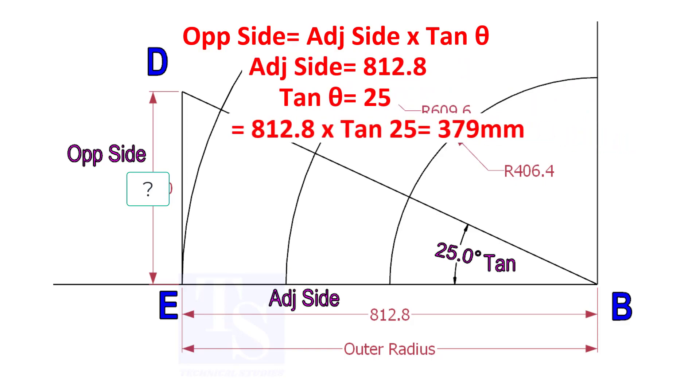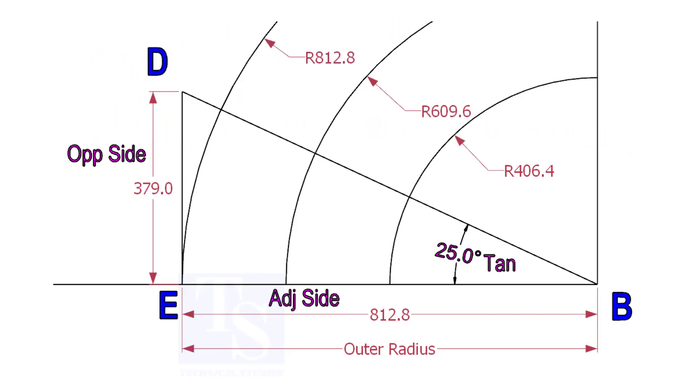812.8 into tan 25 equals 379 millimeters. Draw the line ED vertically and the slant line DB. I hope now you will be able to draw a line in any degree.